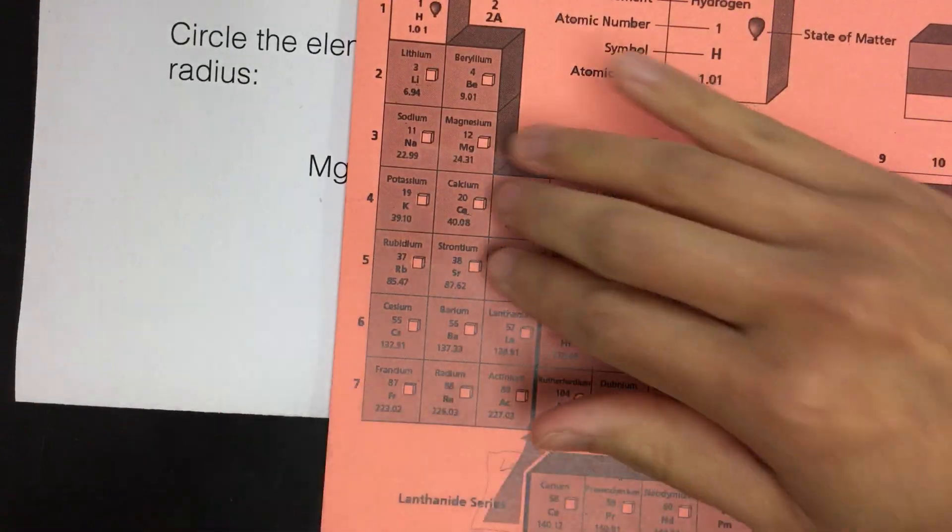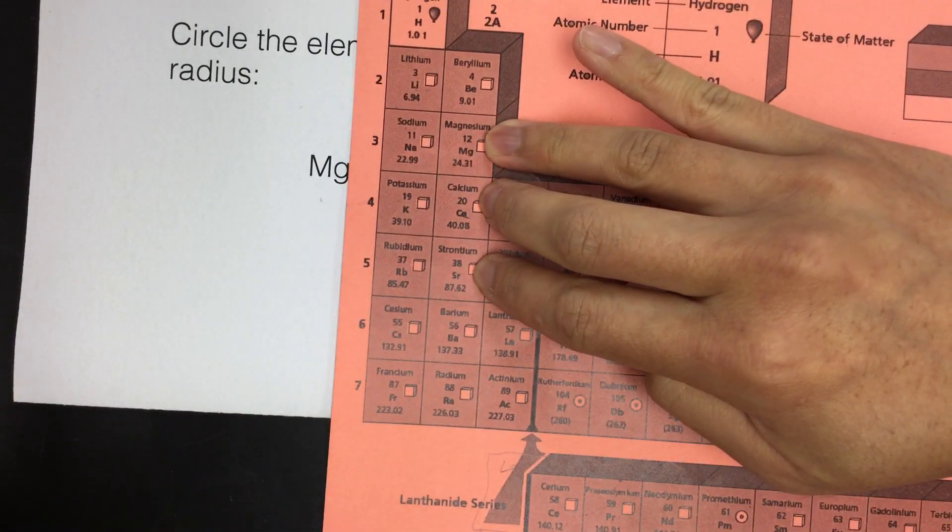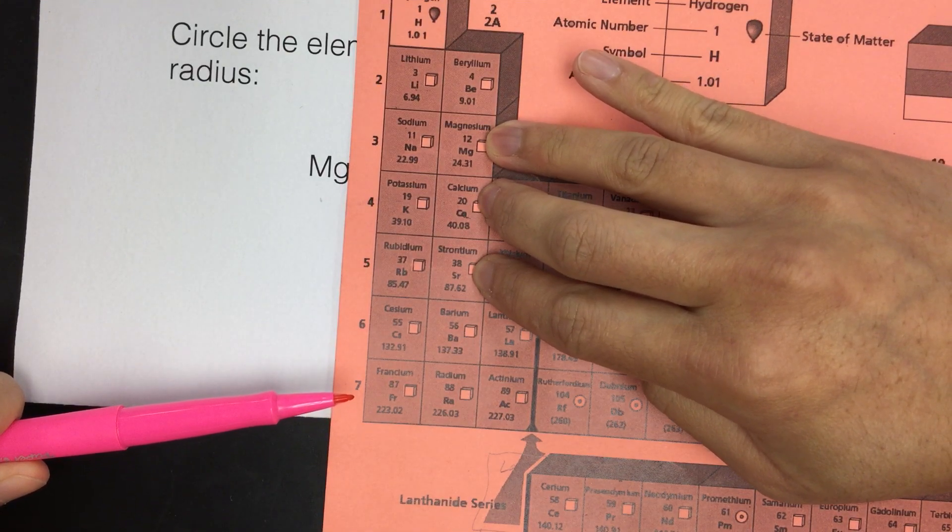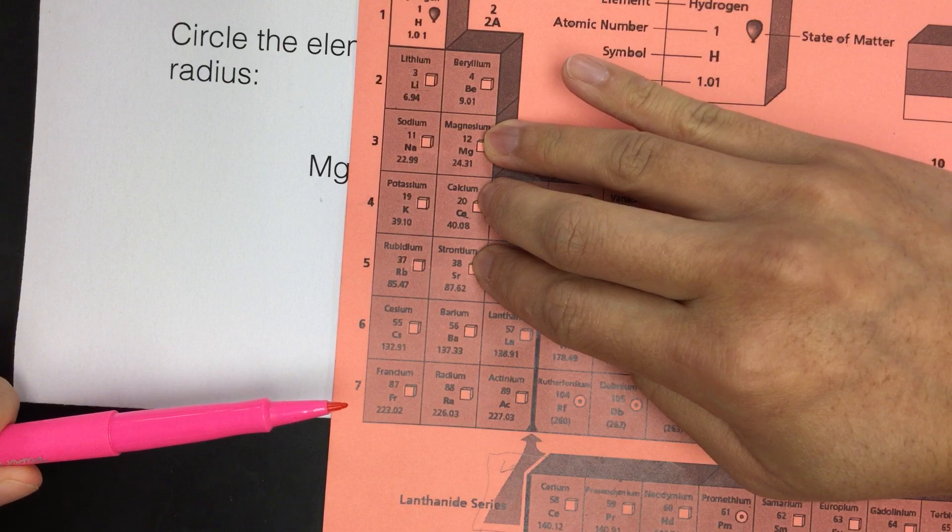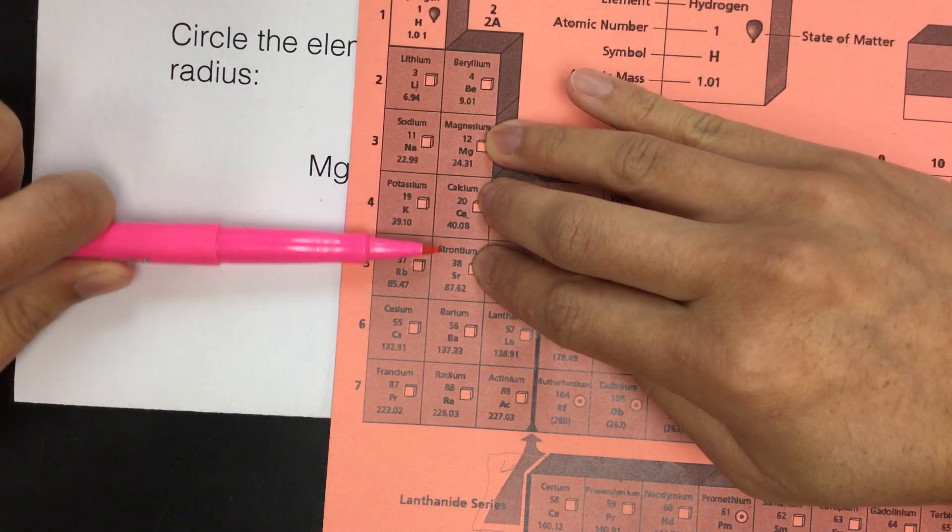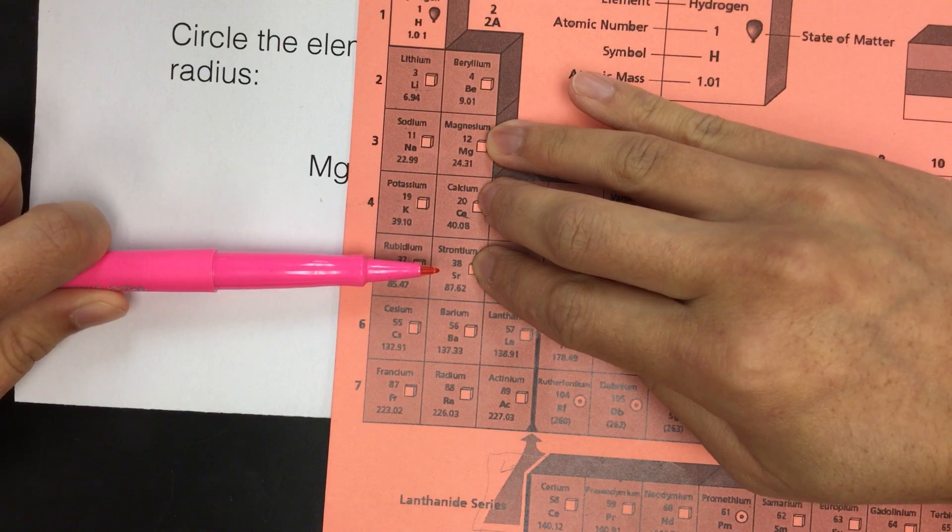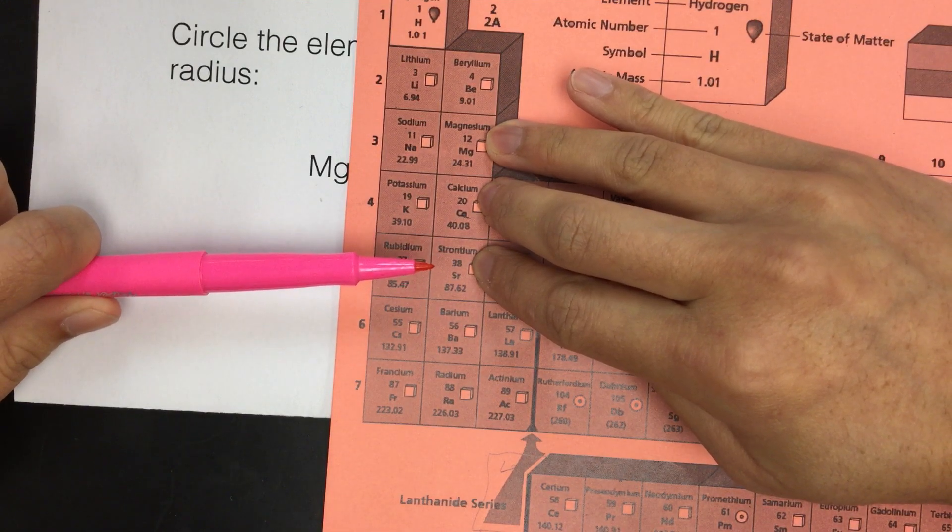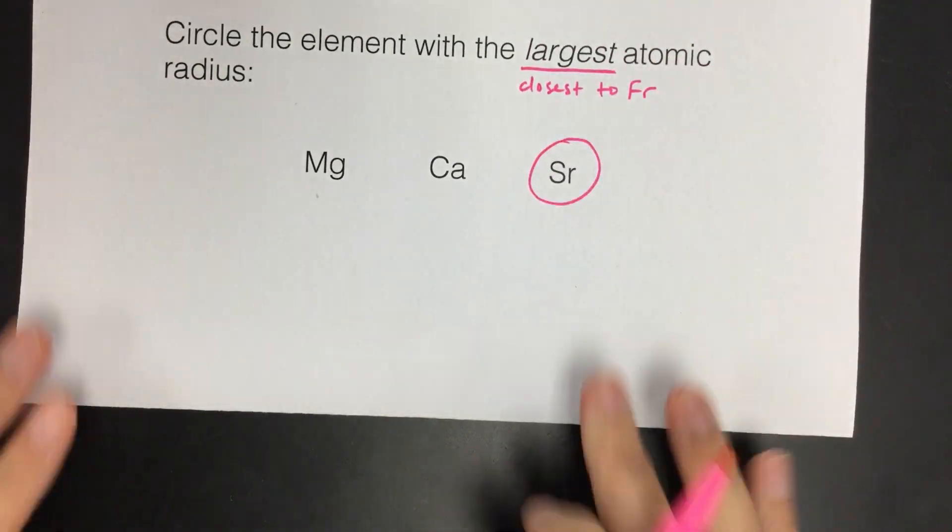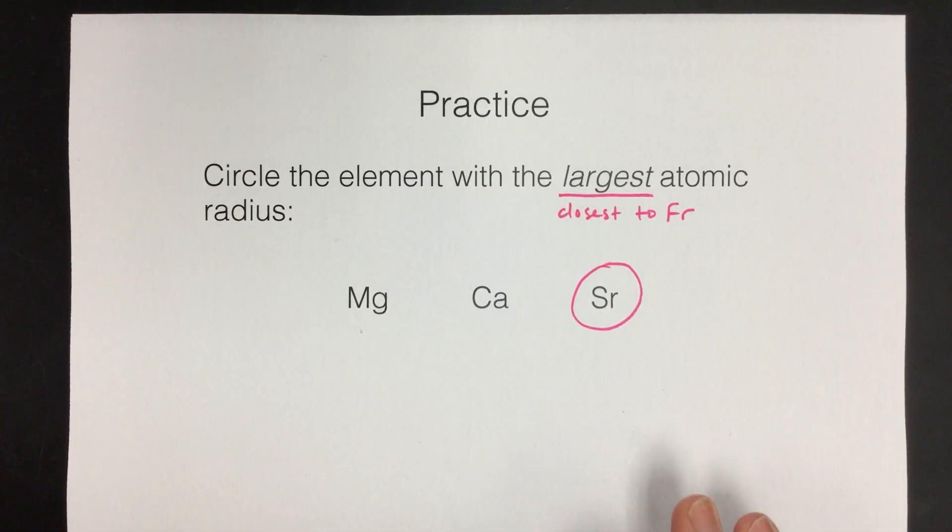As we're comparing these three here, magnesium, calcium, and strontium, francium is right here. So clearly the one that's closest to francium is strontium. It makes sense because we know that as we go down a family, we're adding energy levels. And so strontium would be the biggest because it has the most energy levels. So for this one, the answer is strontium. It is the biggest. It's in that bottom left corner of the table.